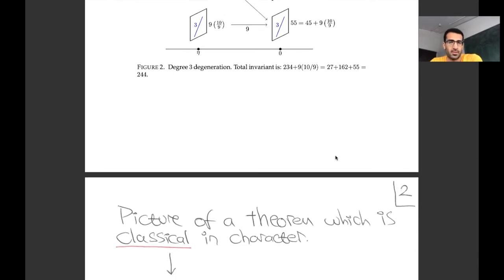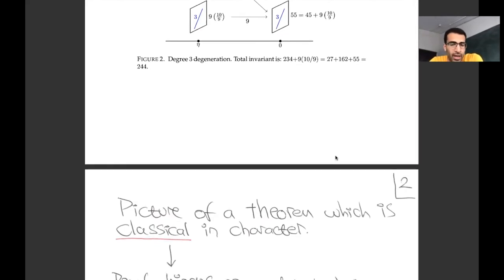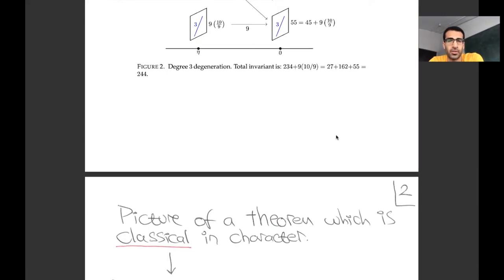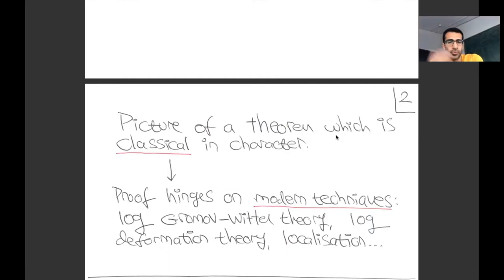These pictures are of a theorem which is really classical in character—it could have been stated in the 19th century. As far as we're aware, it hasn't been stated up until now. What's interesting, and I think this is emblematic of a lot of this field, is that the proof really hinges on very modern techniques that weren't around even 10 years ago. It uses things like log Gromov-Witten theory, log deformation theory, intersection theory, localization, tropical geometry, and so on.